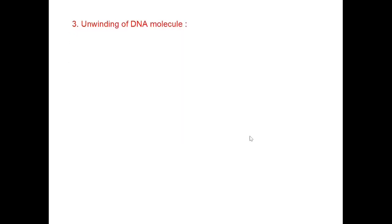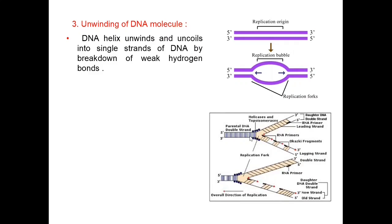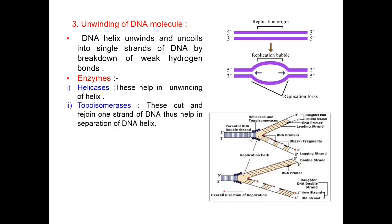The next step is unwinding of the DNA molecule. The DNA helix unwinds and uncoils into single strands by the breakdown of weak hydrogen bonds between the nitrogen bases. The enzymes responsible for unwinding include helicases, which help in unwinding the helix, and topoisomerases, which cut and rejoin one strand of DNA, thus helping in separation of the DNA helix. These enzymes unwind and cut the DNA.